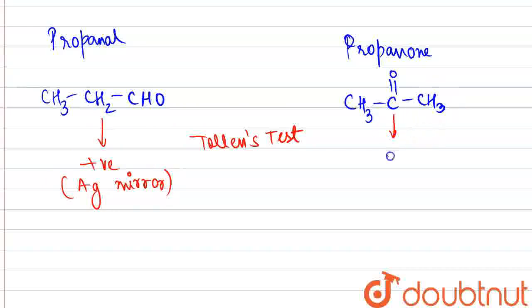But ketones will give a negative Tollen's test. There is no silver mirror formed during the course of the reaction. This is how we can distinguish them. Thank you.